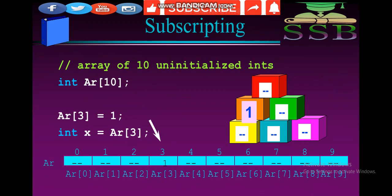Another example: array of 10 uninitialized integers — integer a[10]. Setting ar[3] = 1 and integer x = ar[3]. Index starts from 0, 1, 2, 3, 4, 5, 6, 7, 8, 9. These are the blocks showing how we subscript an array of 10 uninitialized elements.